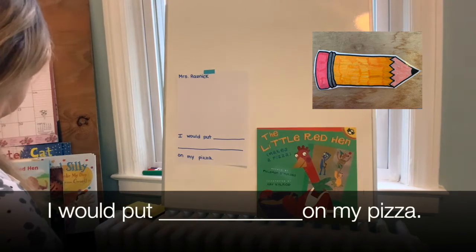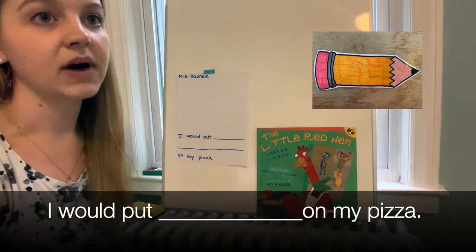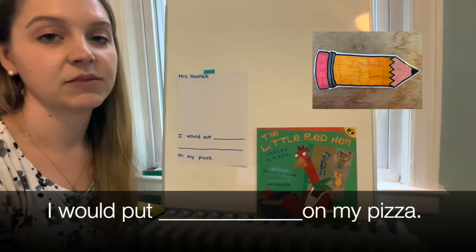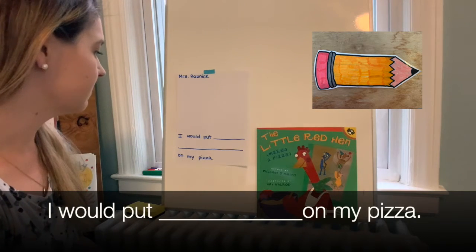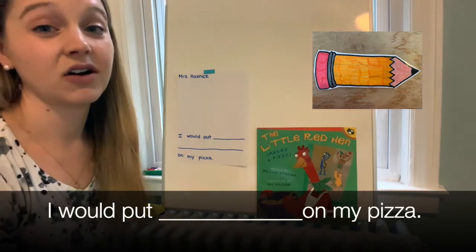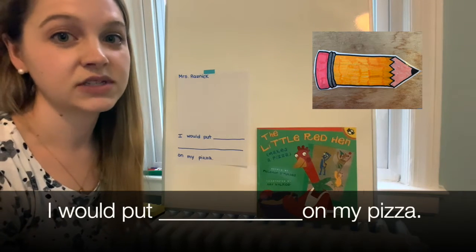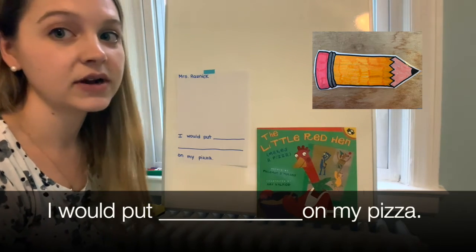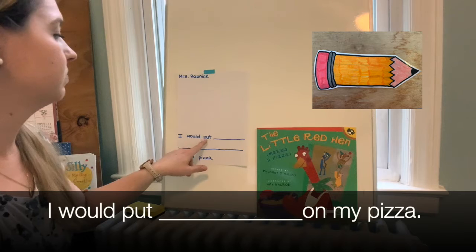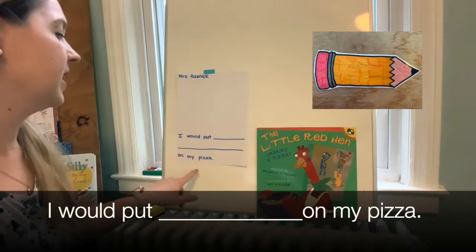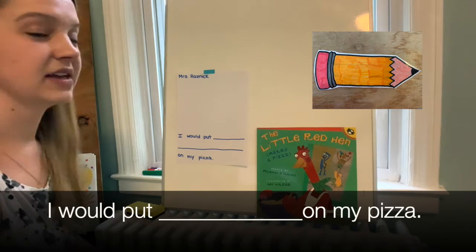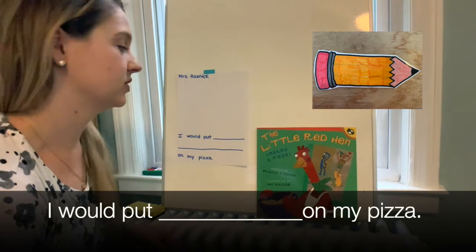If I was making a pizza, I like lots of veggies on my pizza. So I might write a couple of different ones here, but some of my favorite veggies to put on my pizza are artichokes and mushrooms. So for my sentence, I want to say 'I would put artichokes and mushrooms on my pizza.' That's a lot of stretching, but I'm going to do my best with those words today.